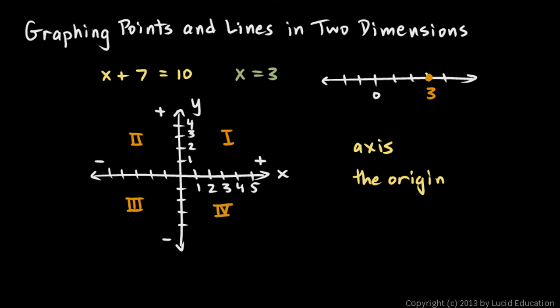Every math book I've ever looked at numbers these with Roman numerals. I'm pretty sure the reason is just so that if you refer to those quadrants one, two, three, and four, those numbers don't get confused with these other numbers indicating positions on the number line, or on the axis as we call it. So those are typically labeled with Roman numerals. Each of those four regions is called a quadrant.